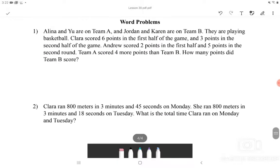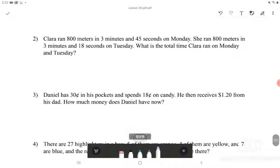The last section that we have here is word problems, and I will do number 2 and number 5 at the end. And the question is, what is the total time Clara ran on Monday and Tuesday? So we have to combine the 2 minutes and seconds together to get the total time she ran. We will first begin by adding the seconds together, 45 and 18.